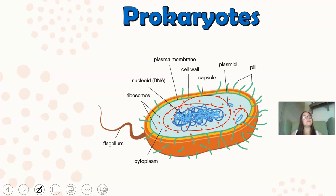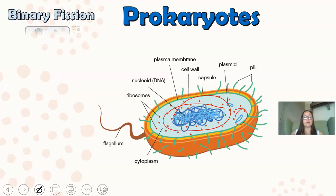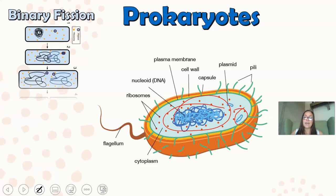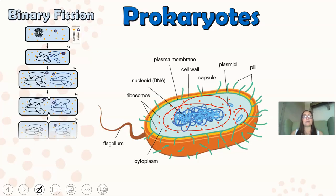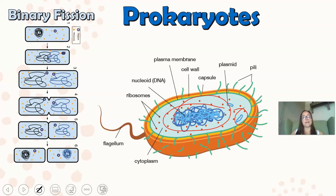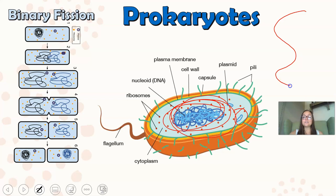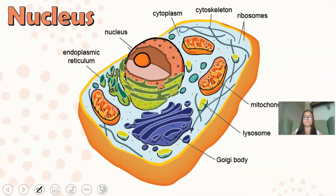Another key difference is that prokaryotes do not undergo mitosis; instead they reproduce through a process called binary fission. In binary fission, the cell makes a copy of its one circular chromosome and then divides the cytoplasm into two cells. This circular chromosome is in contrast to the linear chromosomes found in eukaryotes.